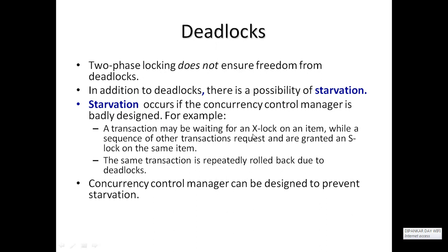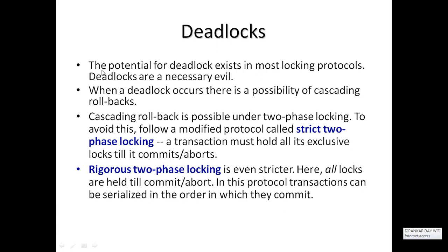A transaction may be waiting for an exclusive lock on a data item while a sequence of other transactions repeatedly request and are granted shared locks on the same item. The same transaction may also be repeatedly rolled back due to deadlock. The concurrency control manager can be designed to prevent starvation. The potential for deadlock exists in most locking protocols. When a deadlock occurs, there is a possibility of cascading rollback — a sequence of transactions must be restarted or redone. Cascading rollback is possible under two-phase locking.